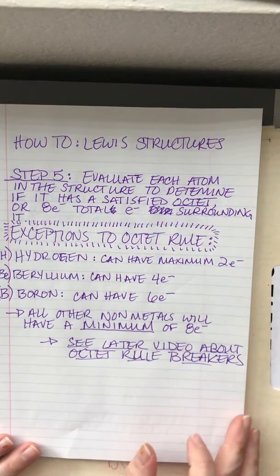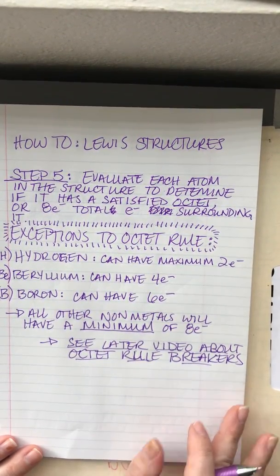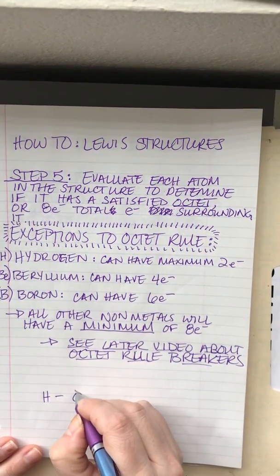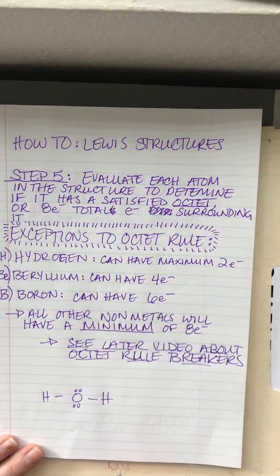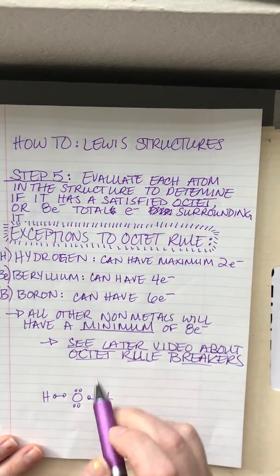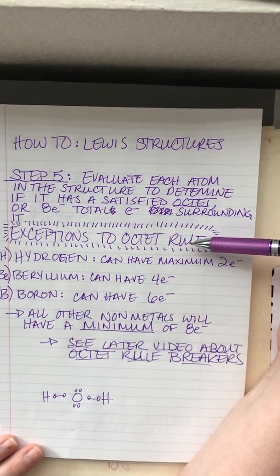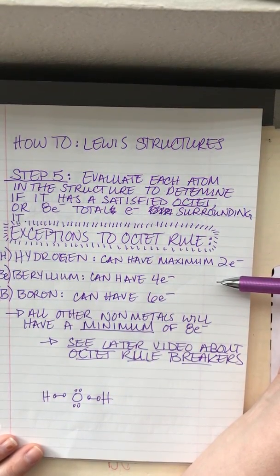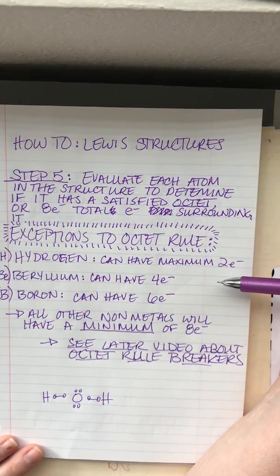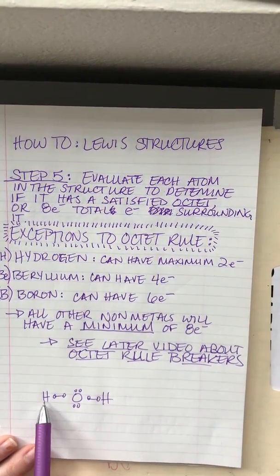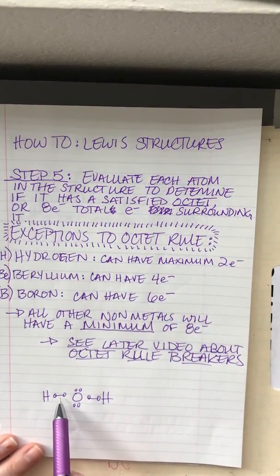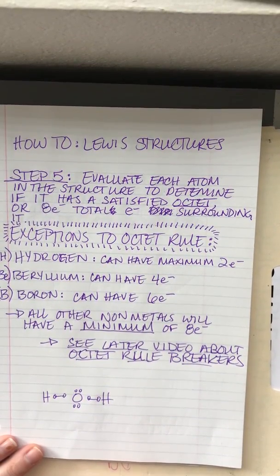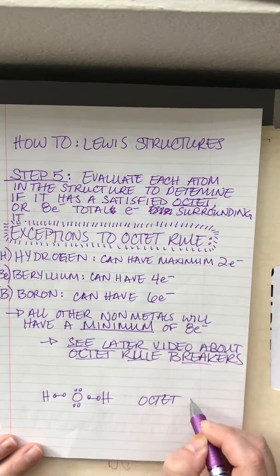The next thing we need to do is evaluate the octet rule. Hydrogen is the exception to the octet rule — it can only have a maximum of two electrons because it only has the s orbital, which can house two electrons. Each hydrogen has two electrons around it, so it's satisfied. Oxygen wants the full octet: it has two, four, six, eight electrons around it, meaning its octet is satisfied.